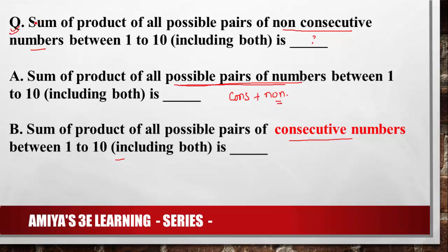So if we need to find question number one — the main question — we can say: total all possible pairs minus consecutive gives us non-consecutive. We will solve question A and question B to get question number one. This is one method, though there is another method also.